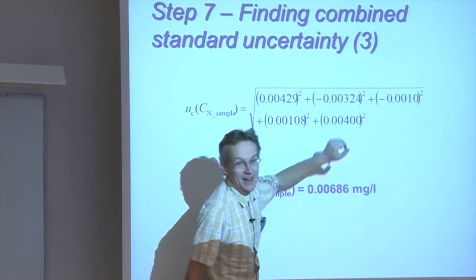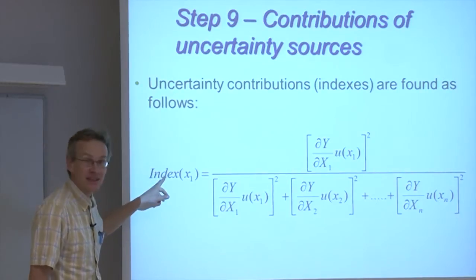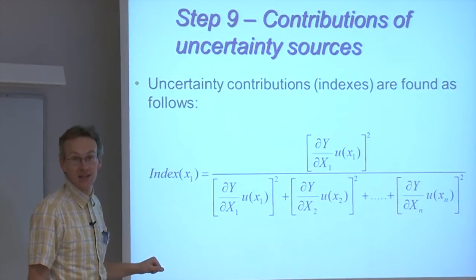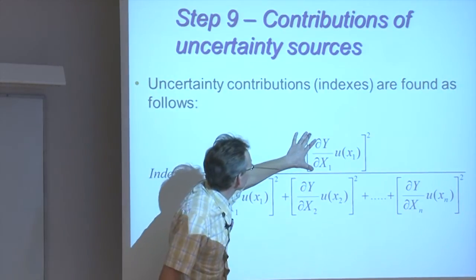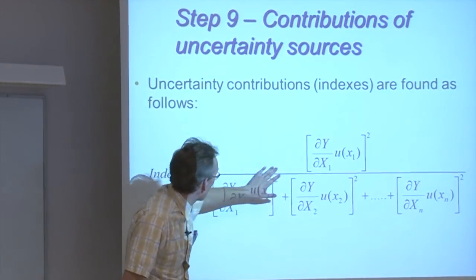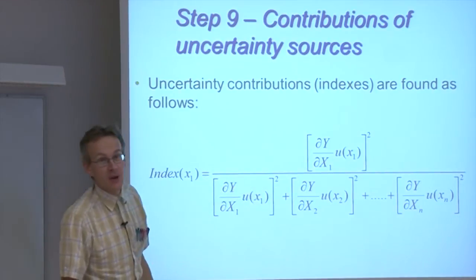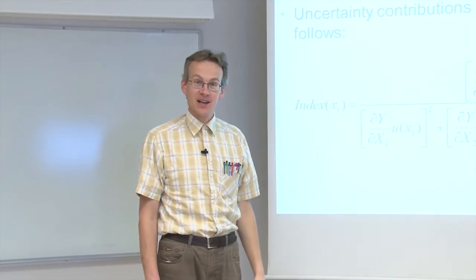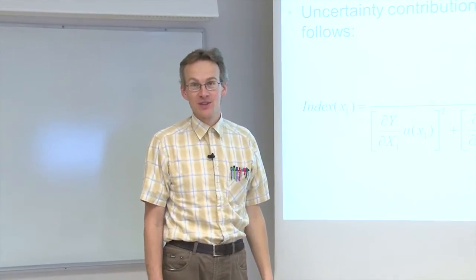Finally, for each of these components we will get numerical values exactly as seen here. In addition, these components are used for calculating the uncertainty contributions or the so-called uncertainty indexes that we saw in the previous lecture. The uncertainty index of an input quantity x1 is found by dividing its squared uncertainty component with the sum of squares of all the uncertainty components, so that once we have calculated the uncertainty component values using the Kragten approach, finding the uncertainty indexes is very easy.